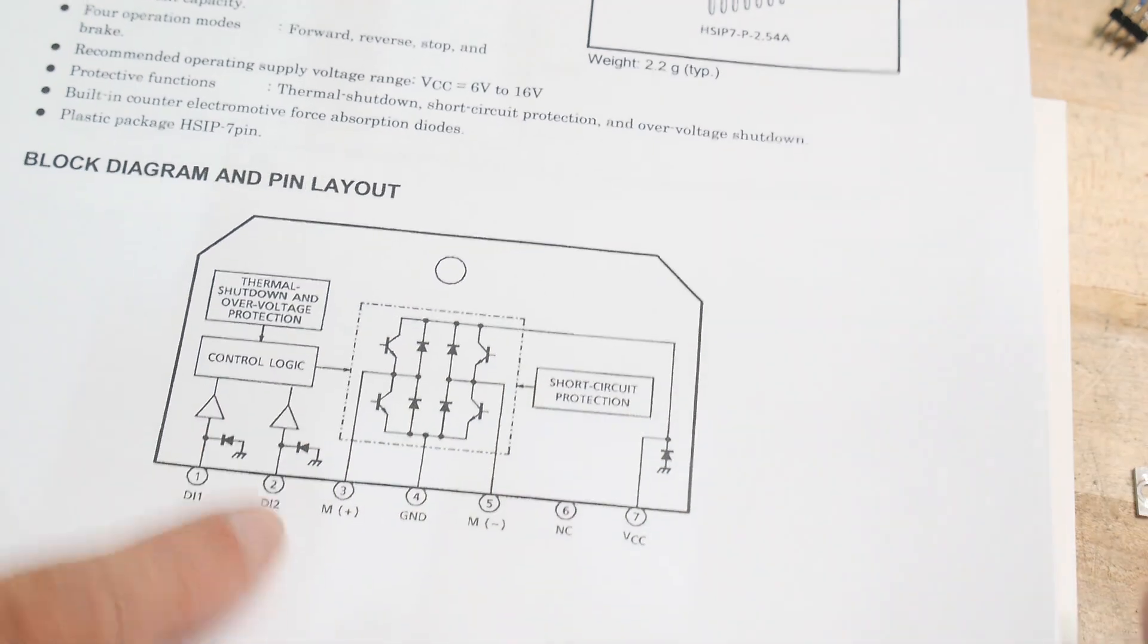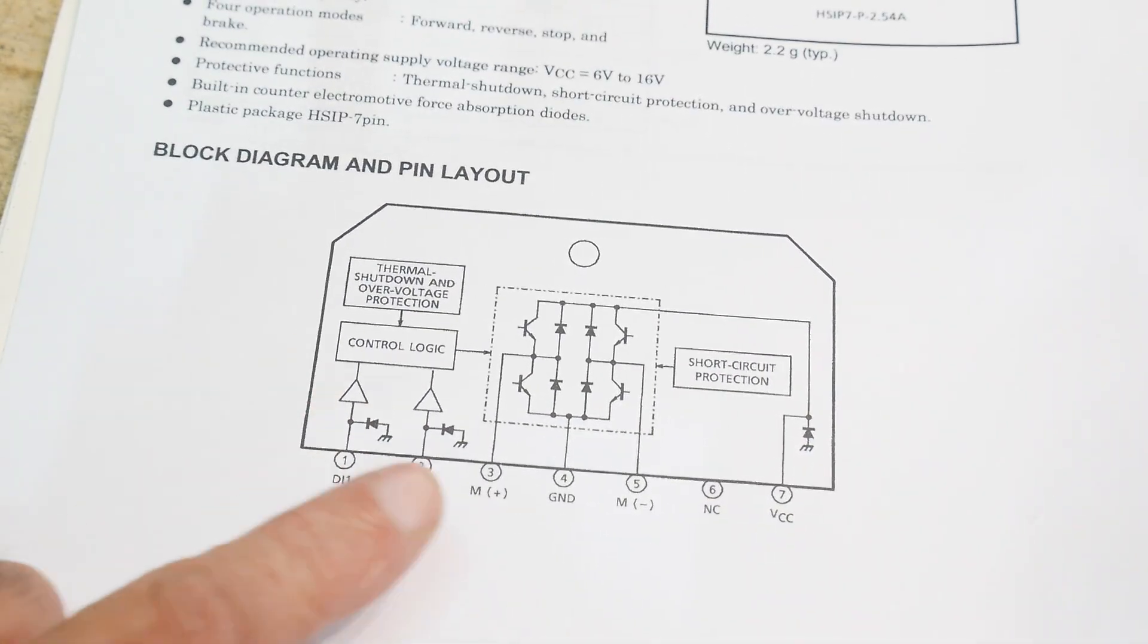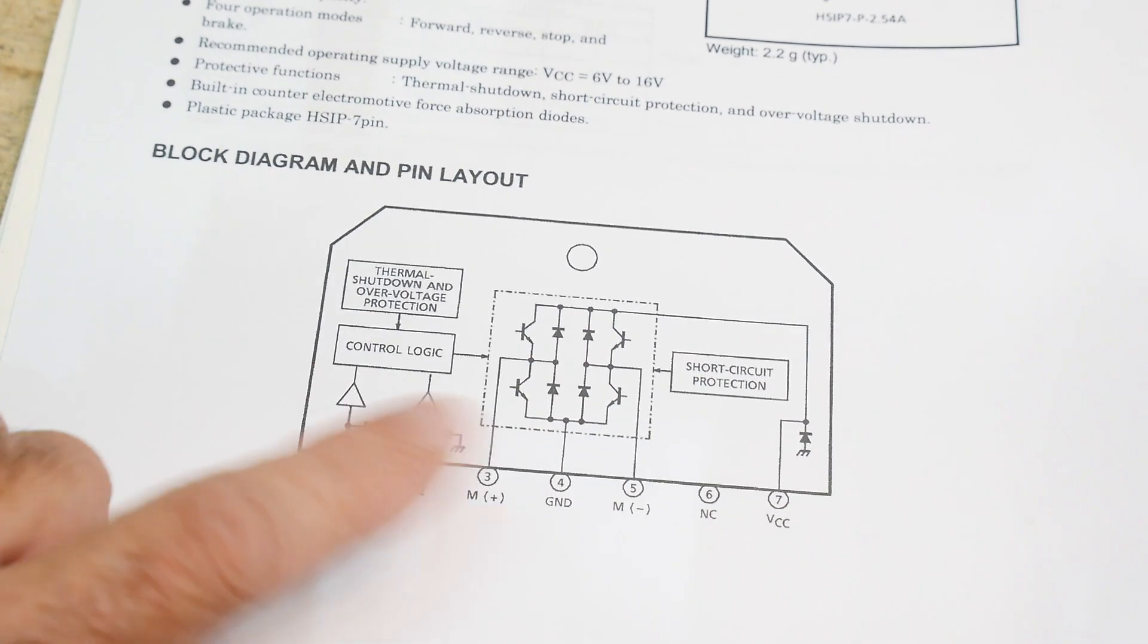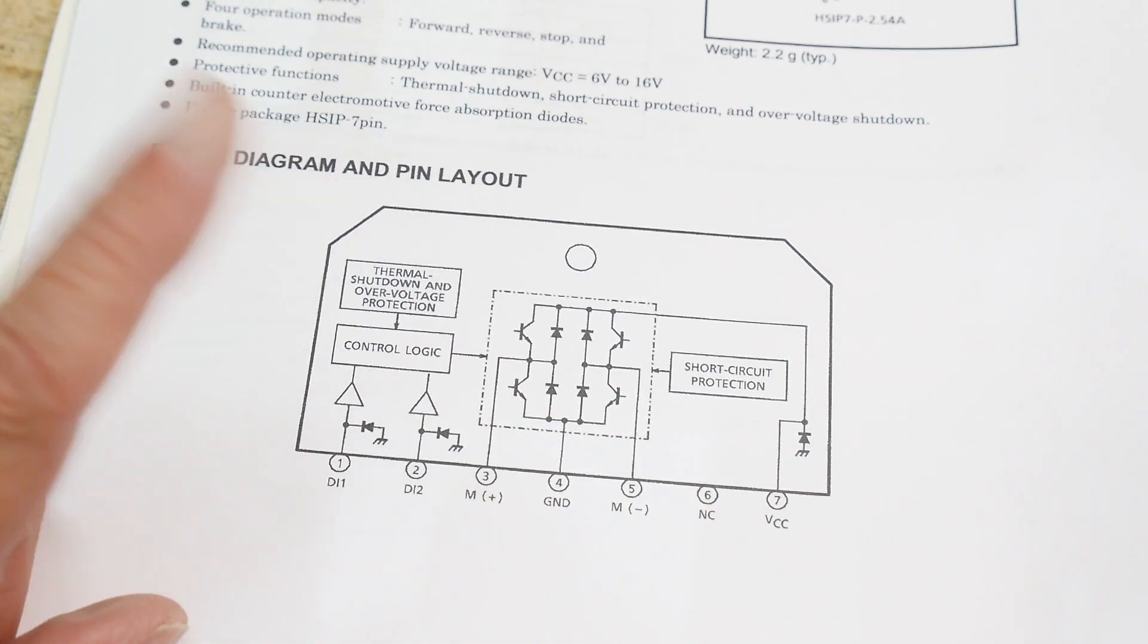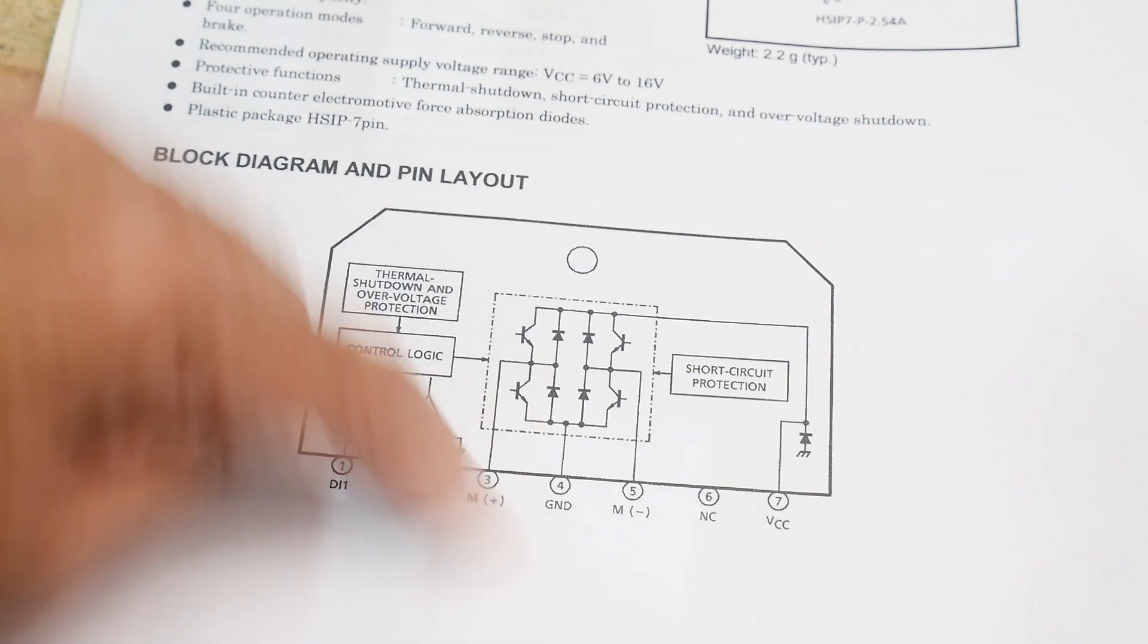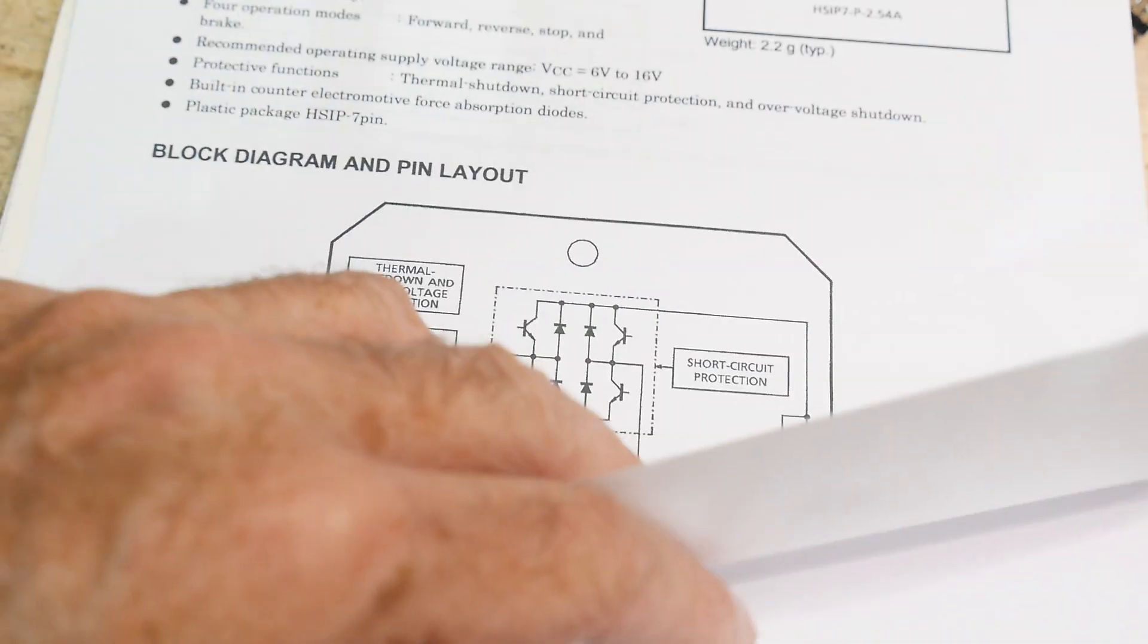So how does this little thing work? Well it's got these two inputs and these are TTL level or CMOS level. You just fiddle these two and then you can connect this. So if you energize one of them it goes forward and if you energize the other one it goes reverse. And it does a little bit more than that, let's look at the truth table.